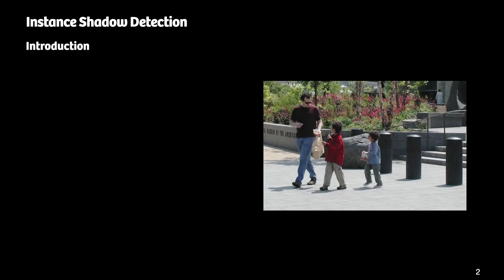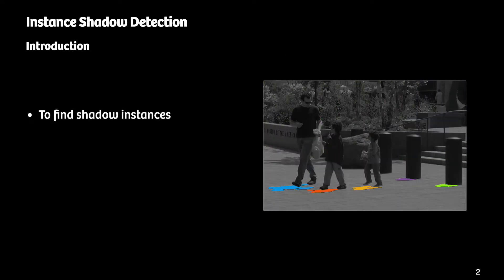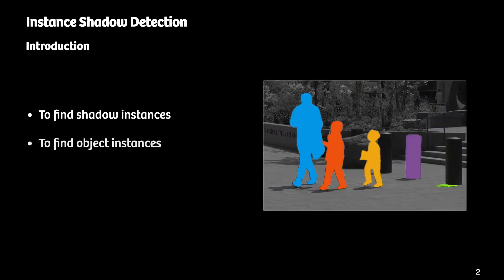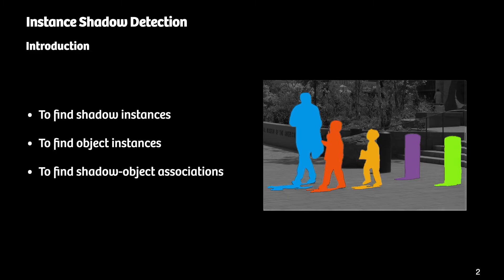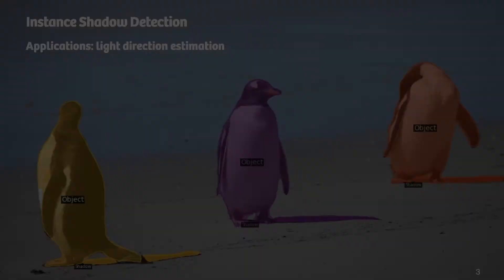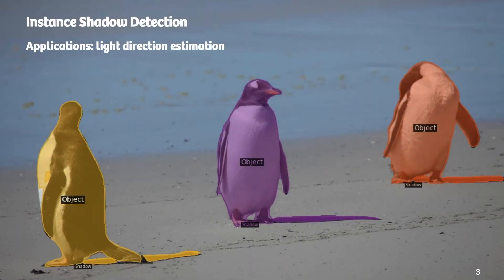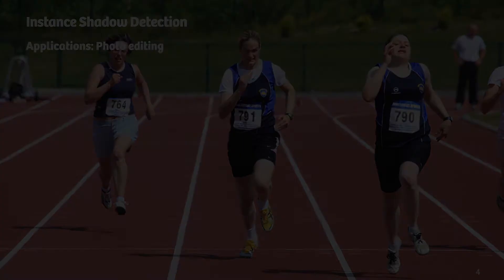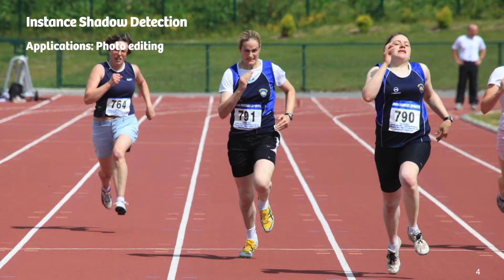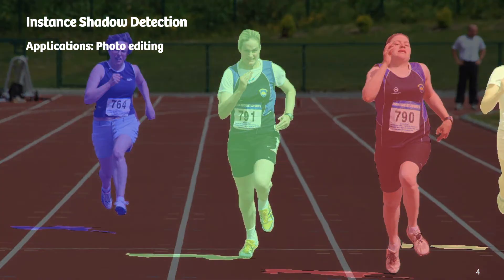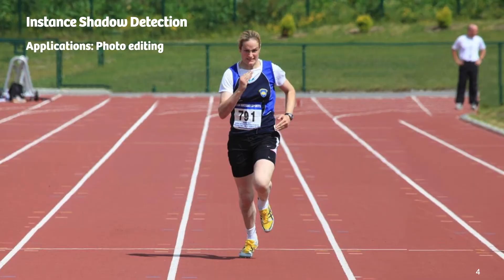Instance shadow detection aims to find shadow instances, object instances, and shadow-object associations. Light direction estimation is one application — we can generate the shadow of the right state from the result of instance shadow detection. Photo editing is another application, where we can remove persons with their shadows altogether.